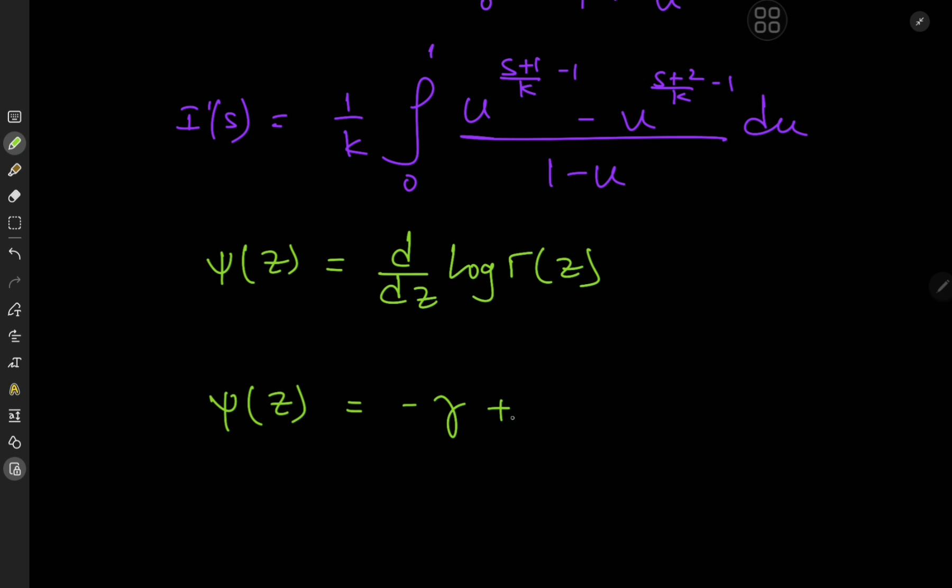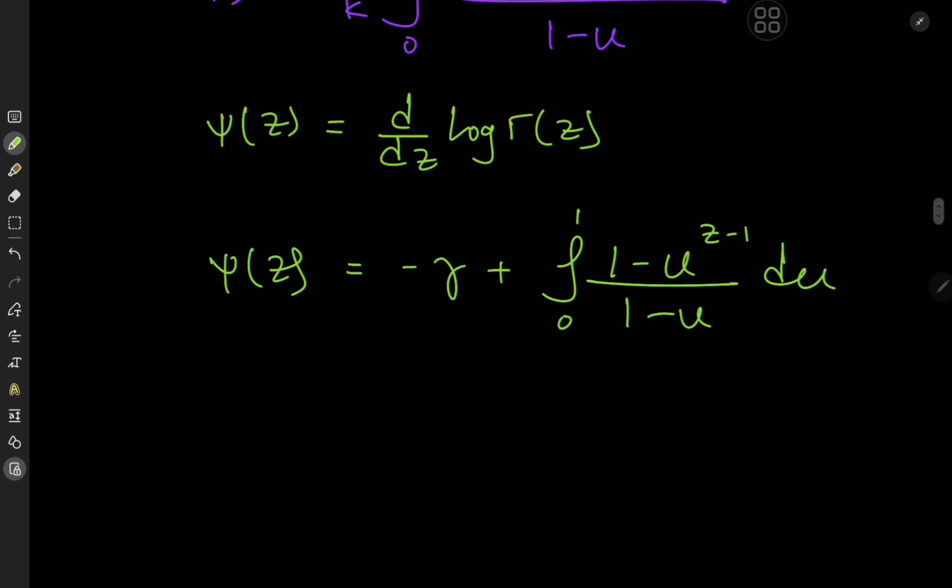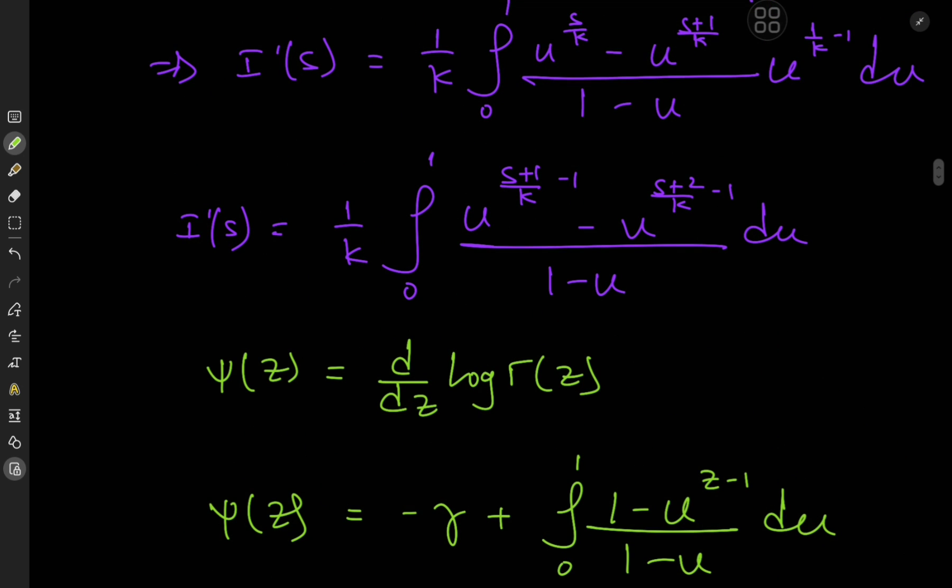We have negative Euler-Mascheroni constant plus integral 0 to 1 of 1 minus u to the z minus 1 divided by 1 minus u du. So if I take the digamma function evaluated at z1 and subtract from it the digamma function evaluated at z2, then the Euler-Mascheroni would just cancel out and I have the integral from 0 to 1 of u to the z2 minus 1 minus u to the z1 minus 1 divided by 1 minus u du.